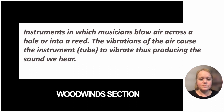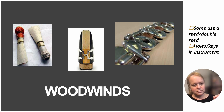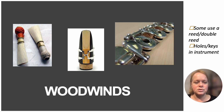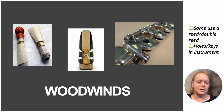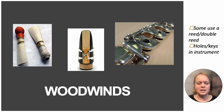Double reed instruments — like bassoon, English horn, and oboe — use two pieces of cane tied together, with thread wrapped around to hold them. The clarinet uses a single reed held on by a silver holder. Flutes are played by blowing across the top, like a bottle. Each woodwind instrument has holes and keys that change the different notes.